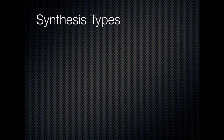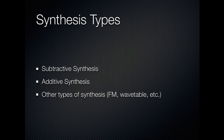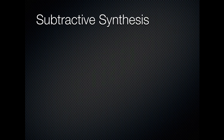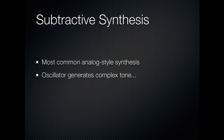The main types of synthesis would be subtractive synthesis, additive synthesis, FM synthesis, wavetable synthesis, and several other types. To begin, we're going to look at subtractive synthesis. This is the most common analog or analog-style synthesizer technique. The basic way it works is you've got something called an oscillator, which creates a complex tone like a square wave, triangle wave, or sawtooth wave, and then you have various filters that subtract partials from that complex tone.